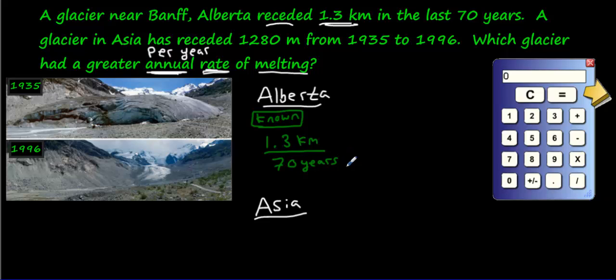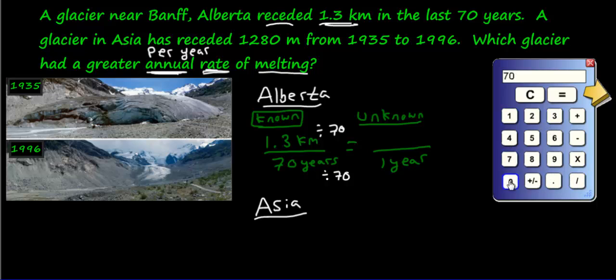So we need to get the unknown. What is going to be the unknown? It's going to be for one year. How did we turn 70 into one? We divide by itself. So we divide this one as well by 70. And then you get 1.3 divided by 70, and you get 0.02. We'll round this to a two. We get 0.02 kilometers per year. So every year it recedes 0.02 kilometers.